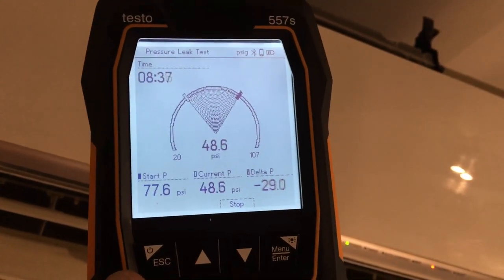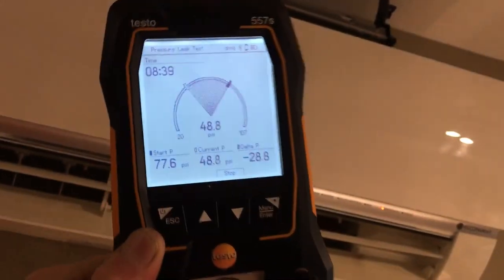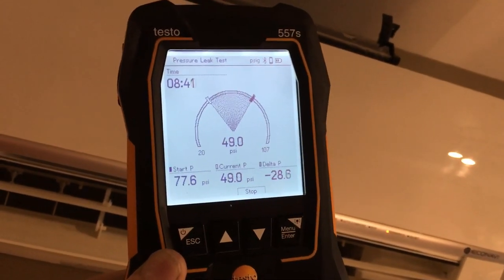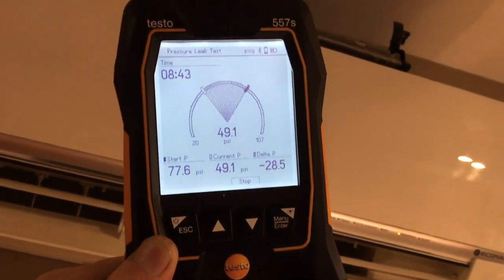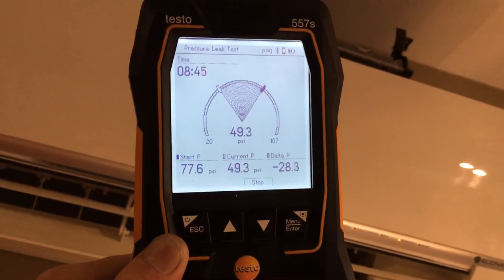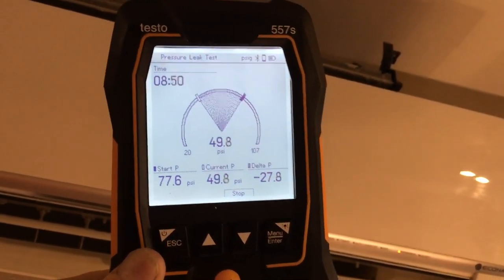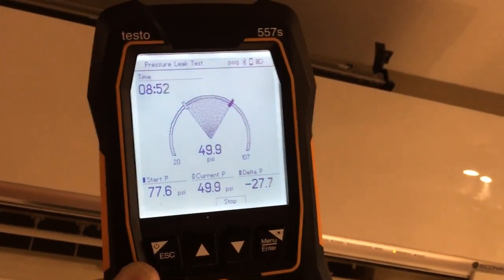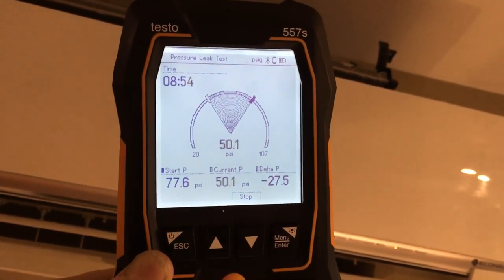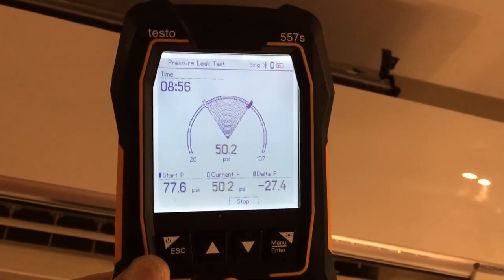And no, I'm not filling it up. So for you guys in automotive who like to think you could hook up a set of gauges and tell if the system is full or not, you could have a full system, you can have a half full system, or you could have one drop of liquid refrigerant and you would get the exact same pressure.